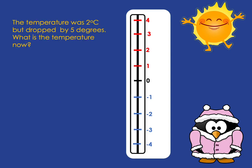We can also look at questions like: if the temperature starts at 2 degrees Celsius but drops by 5 degrees, what's the temperature now? We start at 2 and go down five steps: one, two, three, four, five — that takes us from 2 down to negative 3 degrees Celsius.